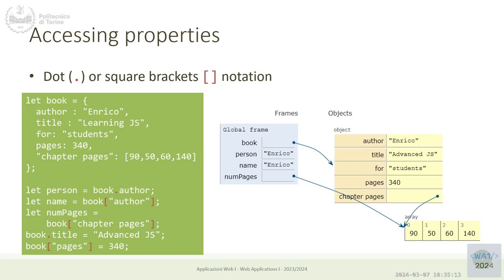The more common use case for bracket notation is when the attribute name is computed — it comes from a variable. If you have a variable x that contains the string 'author', you want to access `book[x]`, not `book.x` (which would look for a property literally named 'x'). This is useful when processing objects with a variable number of properties, looping through them where the property name is determined dynamically. This is all a consequence of attributes being dynamic.